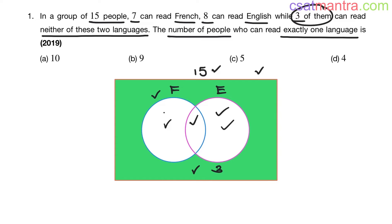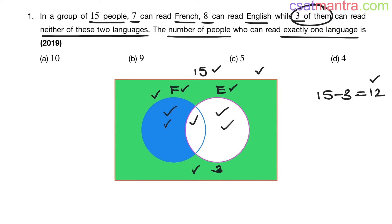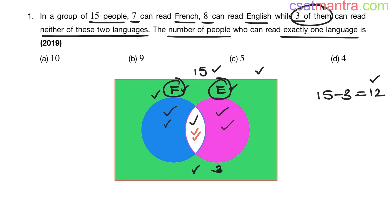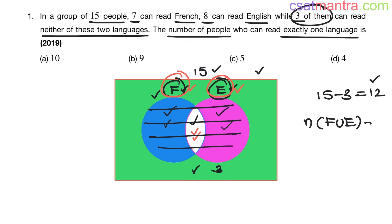This white color area will be 15 minus 3, that is 12. So there are 12 people who read French or English. This area represents people who read only French, this area represents people who read only English, and the intersection area represents people who read both French and English. So the number of people who read French or English — this total area — equals 12.